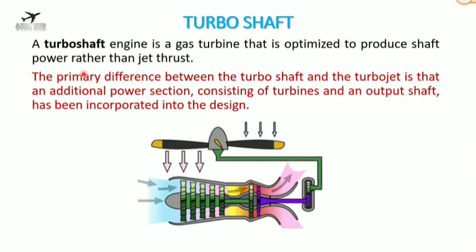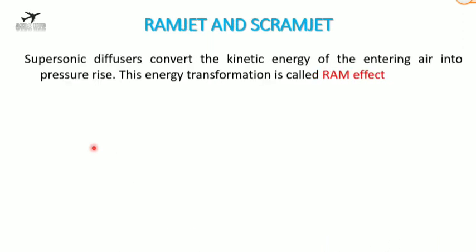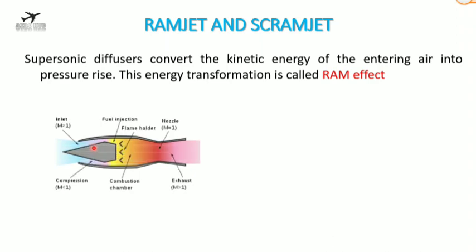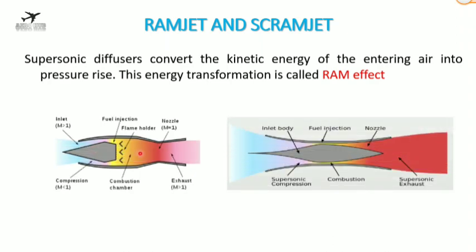The primary difference between the turboshaft and the turbojet is that an additional power section — consisting of turbines and an output shaft — has been incorporated into the design. These kinds of engines are used in helicopters.